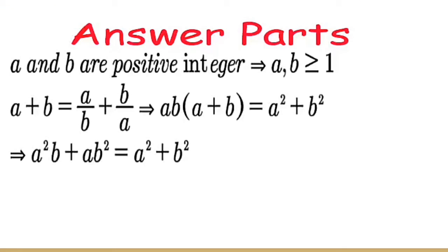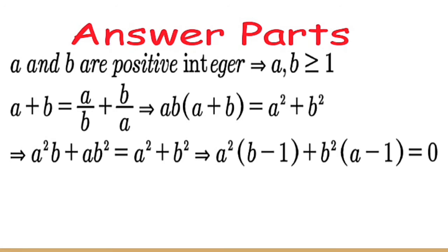That implies a squared b plus ab squared is equal to a squared plus b squared. Rearranging, that implies a squared times (b minus 1) plus b squared times (a minus 1) is equal to 0.